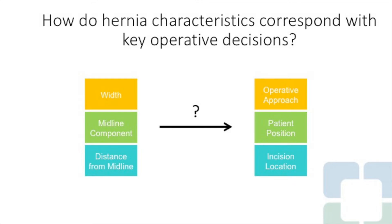We set out to describe how these hernia characteristics, which can be defined preoperatively on imaging studies, influence our operative decision making, particularly operative approach, patient positioning, and incision location.